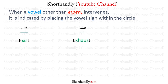Same with the word EXHAUST — we put the vowel sign within the circle. And in the word EXERCISED, we also have to represent the I diphthong, so we simply put the diphthong within the circle.